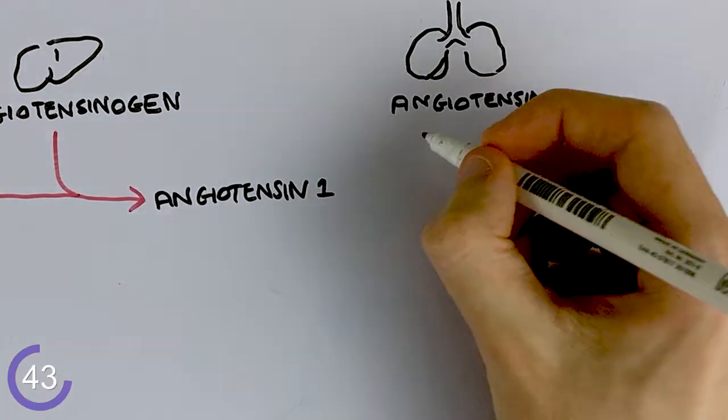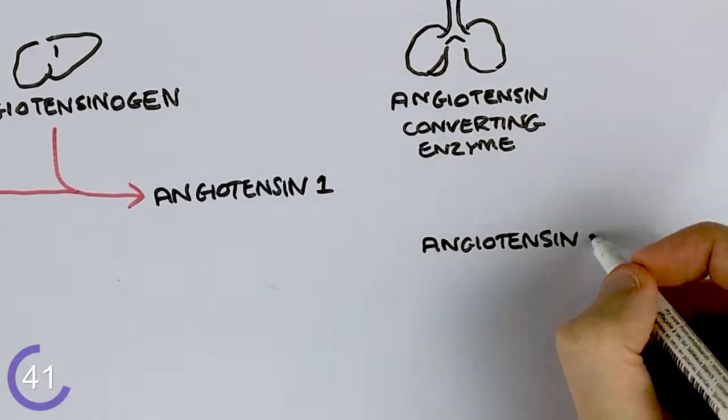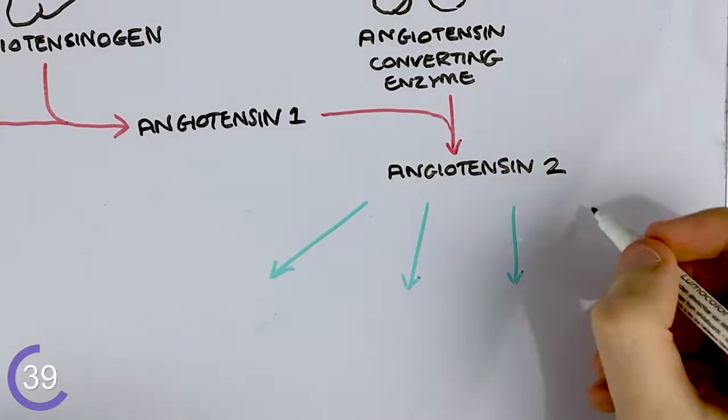The lungs produce angiotensin converting enzyme, which turns this into angiotensin 2. This goes on to do four main things.